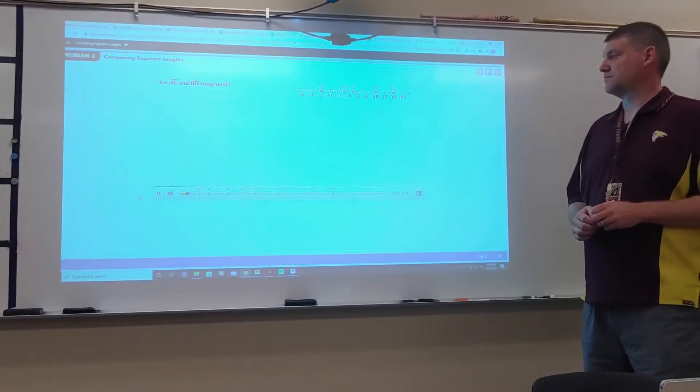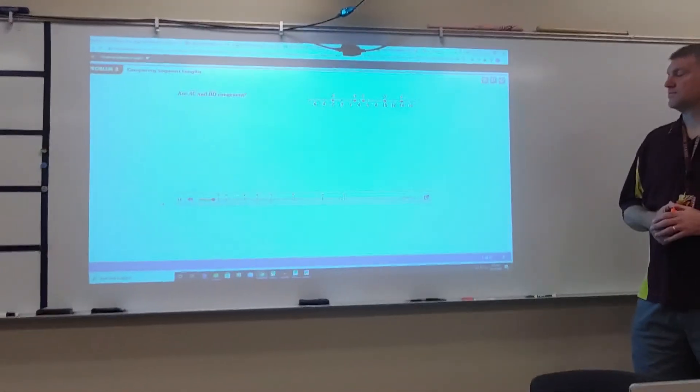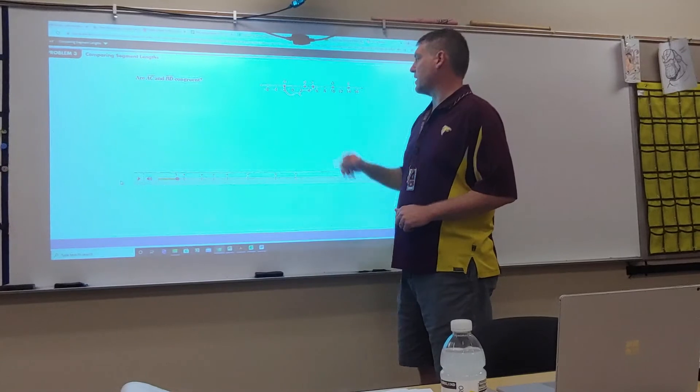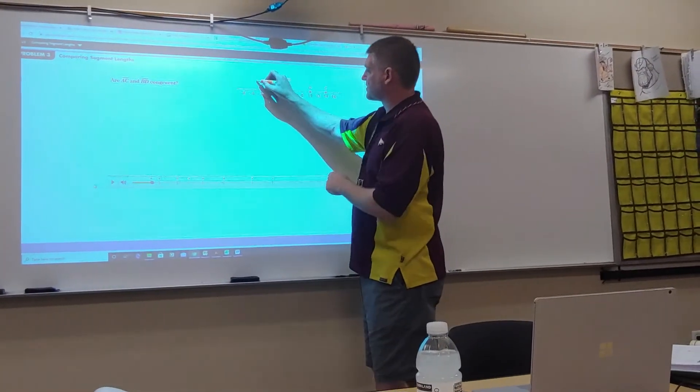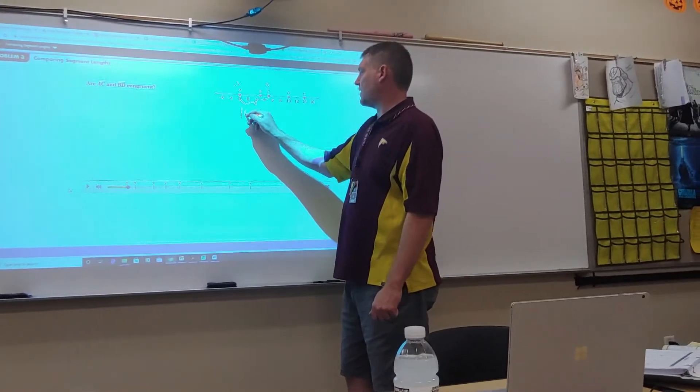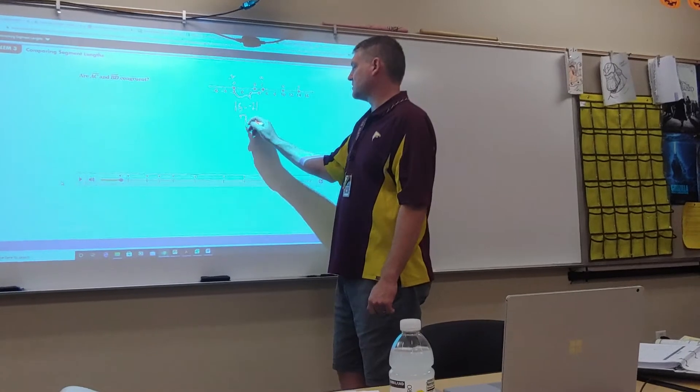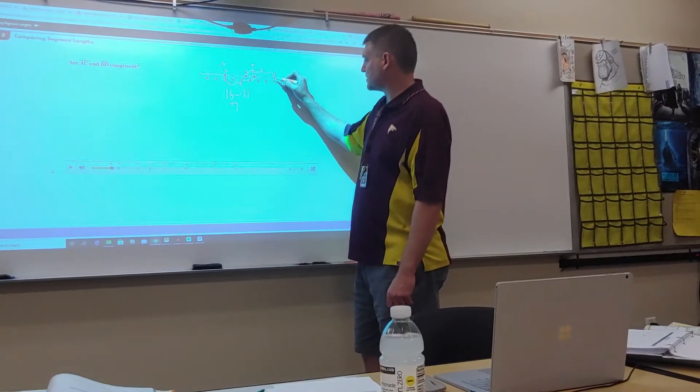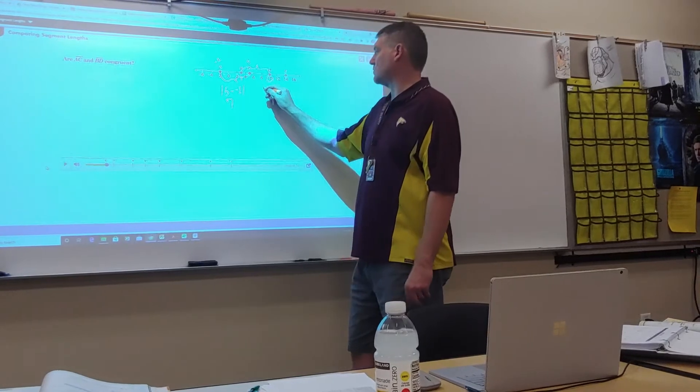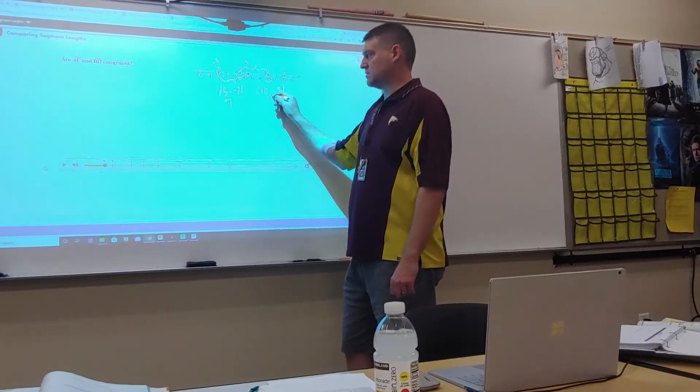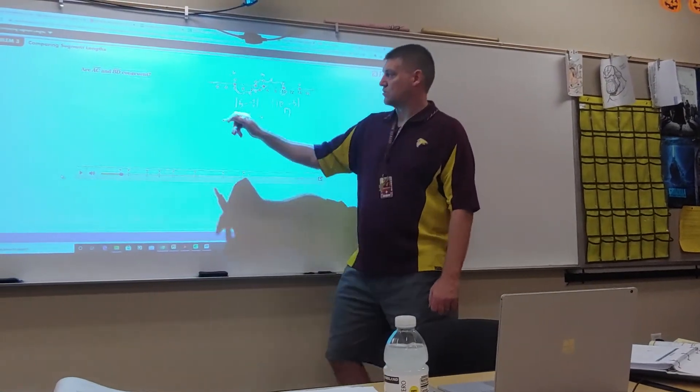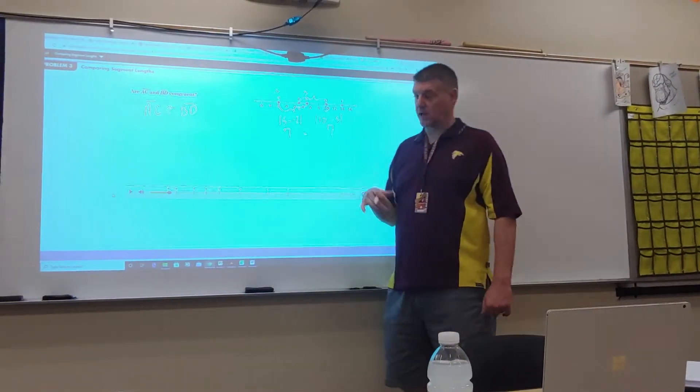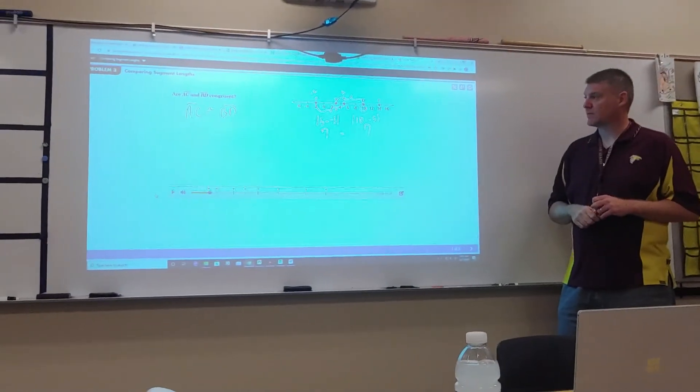In this problem, you will compare segment lengths. Are segments AC and BD congruent? This is using that ruler postulate. I'm looking at this distance right here. This is five and this is negative two. To find that distance, I'm going to go 5 minus negative 2, and that gives me seven. Now I look at BD. This is 10 and this is 3. So I would go 10 minus 3 is 7. So are these equal? Yes. So these are congruent. AC is congruent to BD. Hopefully that makes sense for using that ruler postulate.